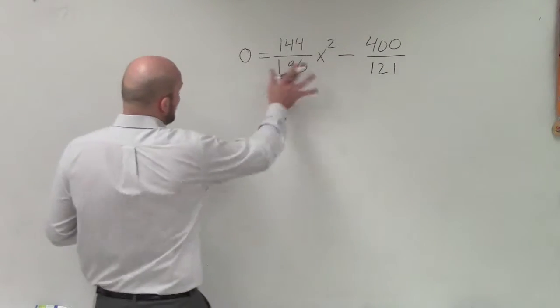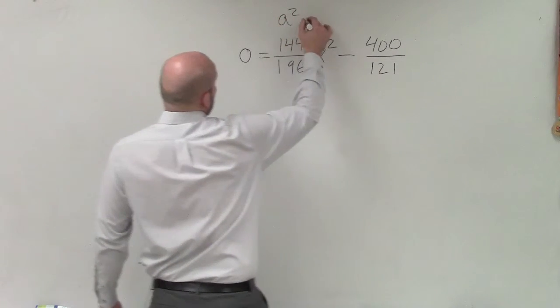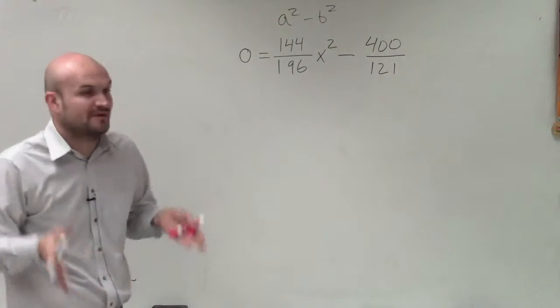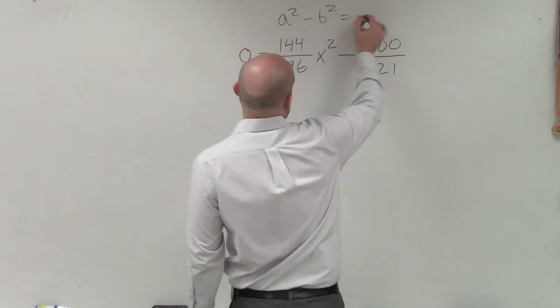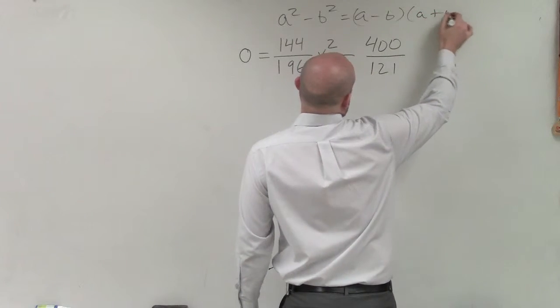So again, to factor by the difference of two squares, that means we need to make sure that we have a quadratic that can at least be written in the form of a squared term minus another squared term. And therefore, we could factor it into a minus b times a plus b.